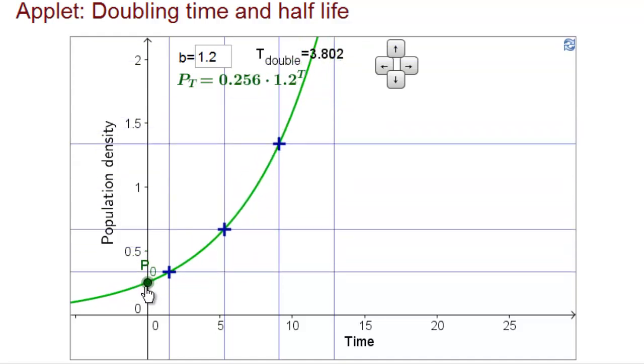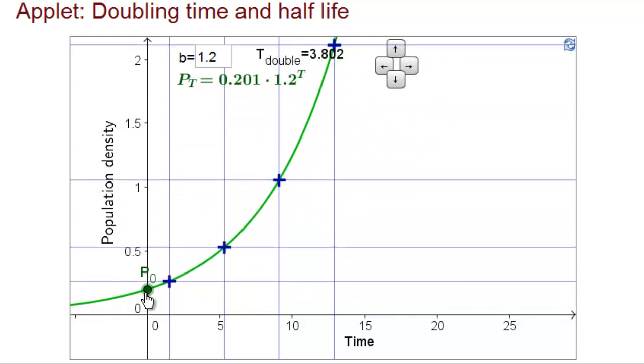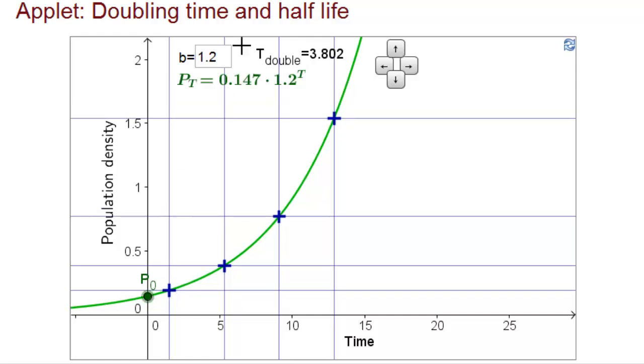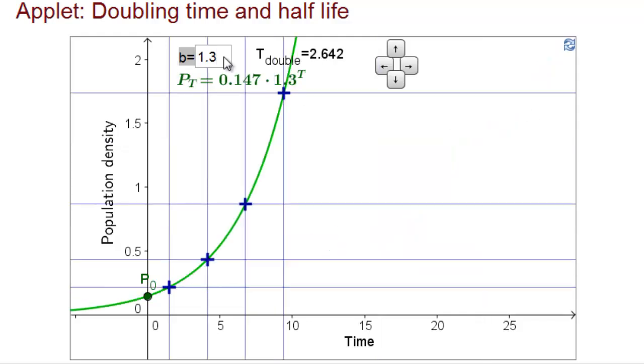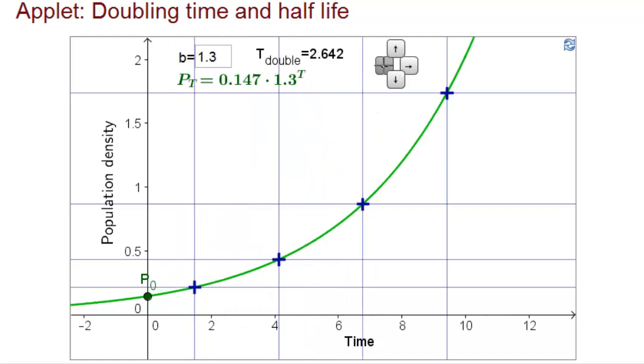Notice that the rate of doubling doesn't depend on the initial condition. It does, of course, depend on b. If we make b smaller, the doubling time gets larger because the growth of the function is slower. And if we make b larger, the doubling time shrinks because the function grows faster.